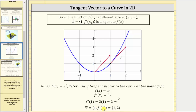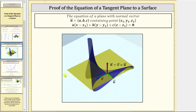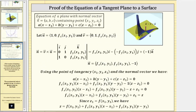Applying this to three dimensions, we can use the first-order partial derivatives to determine the slopes of the tangent lines in the positive x direction and the positive y direction. Then we can use those slopes to help us determine the components of vector u and vector v, which are two vectors in the tangent plane. So let's let vector u equal the vector in the tangent plane that's in the x direction, and therefore its slope must be equal to the partial derivative of f with respect to x at the point of tangency.